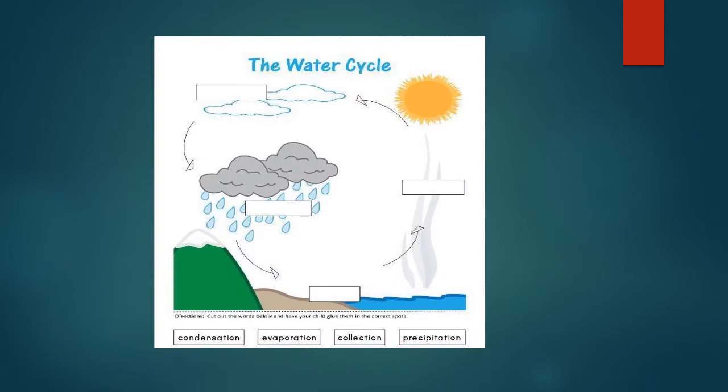Here is a water cycle picture. Please label in the word blocks the words: condensation, evaporation, collection and precipitation. Please study this diagram together with the key concepts — the key words on evaporation, condensation, freezing and melting.